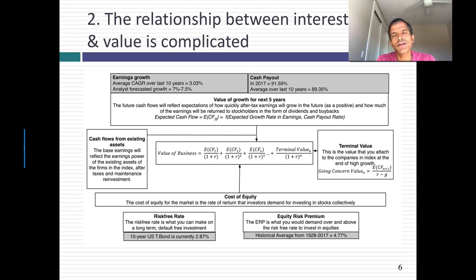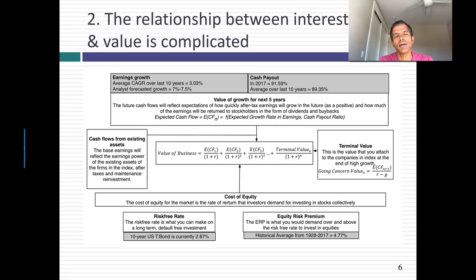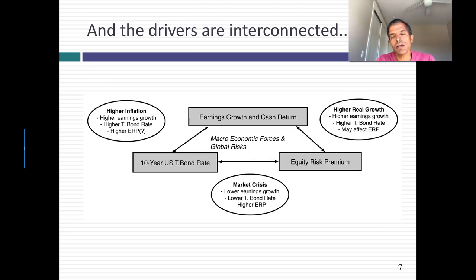The relationship between interest rates and value is complicated. The drivers of value include cash flows in the existing period, the value of growth in the future, a discount rate derived from the risk-free rate and equity risk premium, and a terminal value. With a T-bond rate of about 2.87% and an equity risk premium of roughly 5%, the three big drivers of value are the T-bond rate, the equity risk premium, and earnings growth — and almost every big macro variable affects all three.